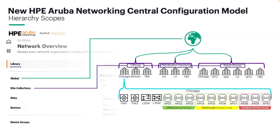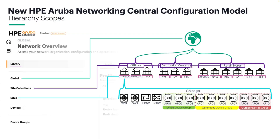The site collection scope is a logical grouping of multiple sites, such as offices, distribution centers, and retail stores. This helps us apply common policies to a larger set of locations without duplicating work. Under each site collection are individual sites, which represent actual geographic locations like Chicago, New York, etc. Any configuration unique to a particular office or branch location, like VLAN IDs or local SSIDs, can be defined here.